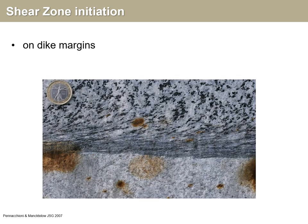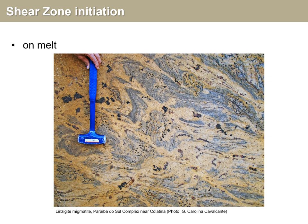Here's an example of a shear zone nucleating along the margin of a dike, a granitic dike in granitic rock, taken from the literature. We see a very strong concentration of strain from the fabric development along the margin of the dike — so pre-existing heterogeneity in the form of a dike-wall rock interface. And here's an example from the hot lower-middle crust where actual melt is forming, and along these melts there seems to have been shear so they actually form shear zones. It's very easy for shear to occur along these bands that contain melts. This one is from the northeast of Brazil.